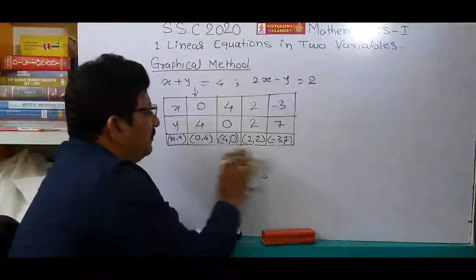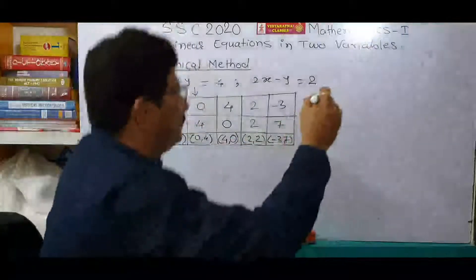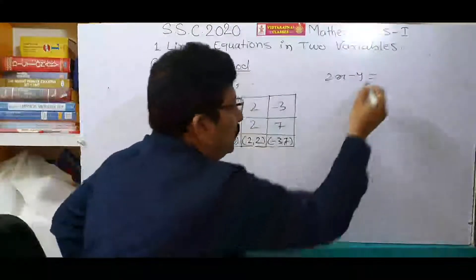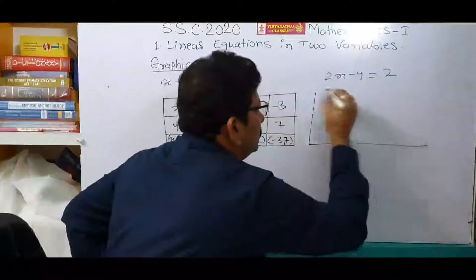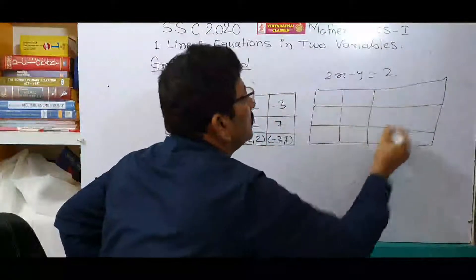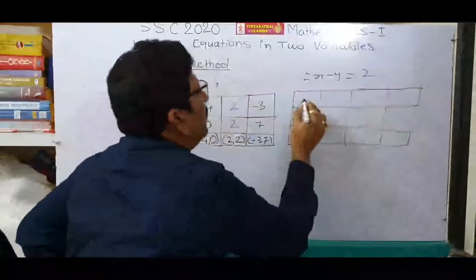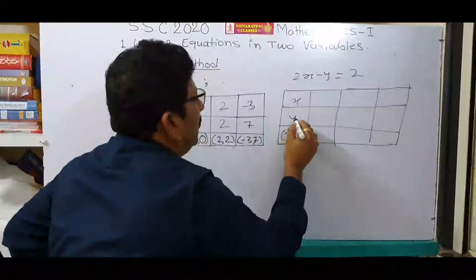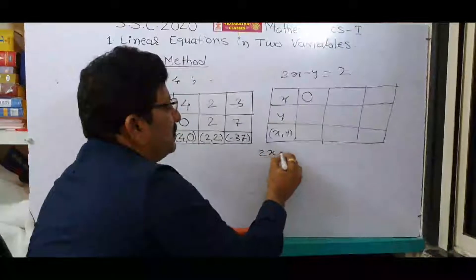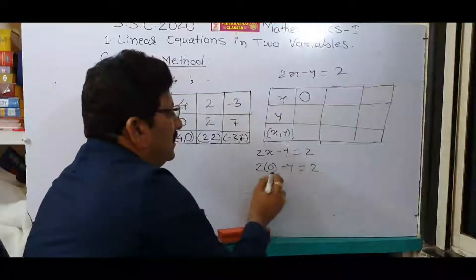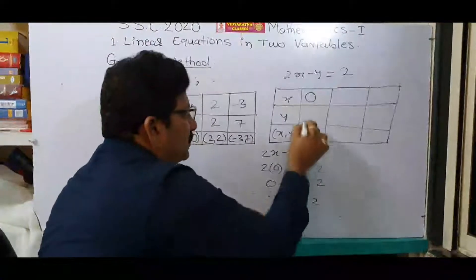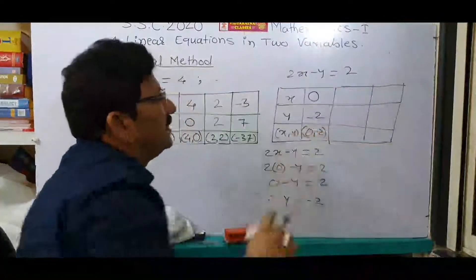In the same way, we have to find out another four ordered pairs for the next equation, that is 2x minus y is equal to 2. Now take x is equal to 0: 2 into 0 minus y is equal to 2, so 0 minus y is equal to 2. Therefore y is equal to minus 2. Your first ordered pair is (0, minus 2).